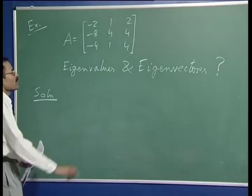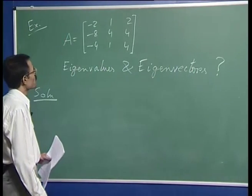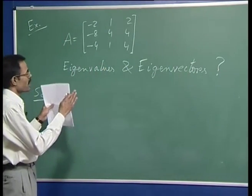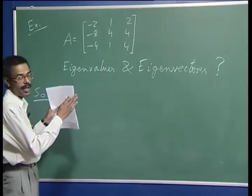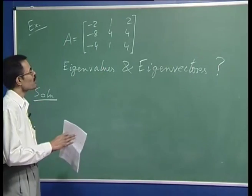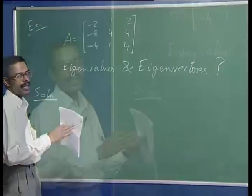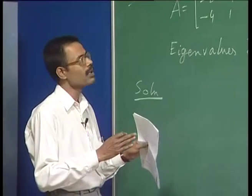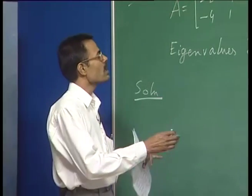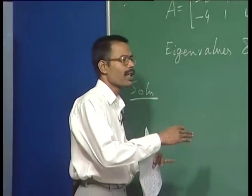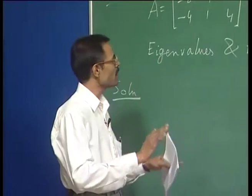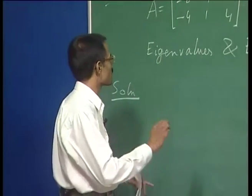First, what we should do? We should find out the matrix lambda I minus A and set that equal to 0 to get the characteristic equation, or we find the characteristic polynomial and try to find its roots.